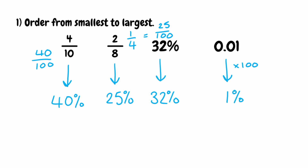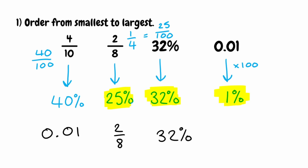Now we've got all of these converted to a percentage, so we can order them from smallest to largest. Our smallest percentage is 1%, so the original value is 0.01. The next smallest is 25%, which was 2 eighths. Then we have 32% and 40%, so 32% comes next, and the biggest is 40%, which was 4 tenths.